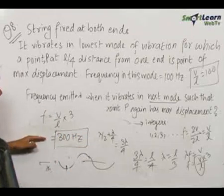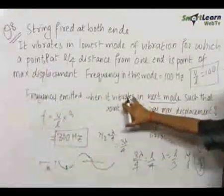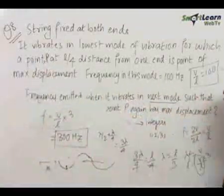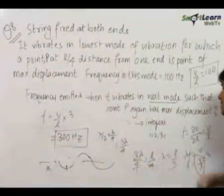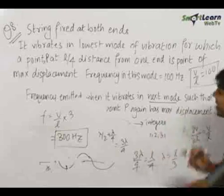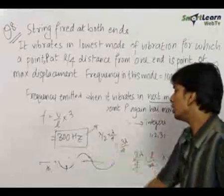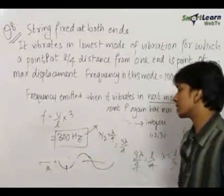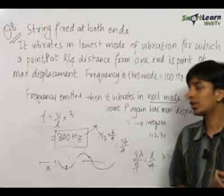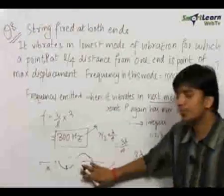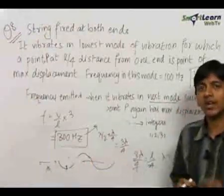The final answer for the frequency emitted when it vibrates in the next mode such that point P again has maximum displacement — that is, it is again an antinode — comes out to be 300 Hz. To solve this question, you just had to draw the diagrams properly and analyze them conceptually and carefully.